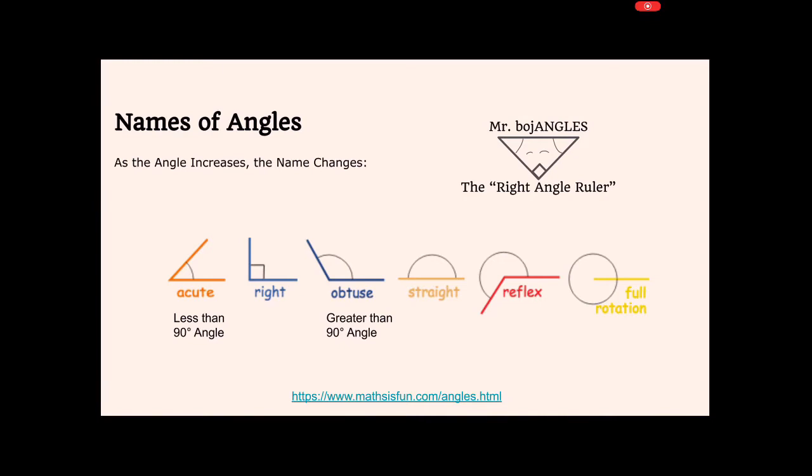Now, if your angle is greater than 90 degrees, we call it obtuse. Obtuse means wide. And here we see an obtuse angle that is wider than a right angle.